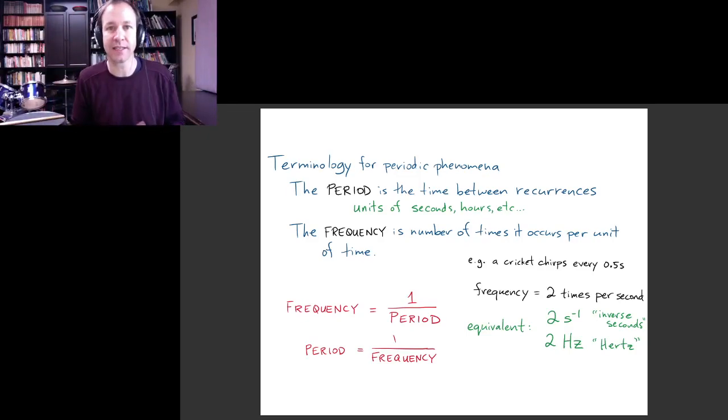The period of the earth's rotation is one day, and the period of the earth's revolution around the sun is one year. We also talk about the concept of frequency, and that is the number of times that an event occurs in a specific amount of time.